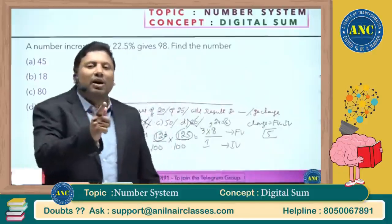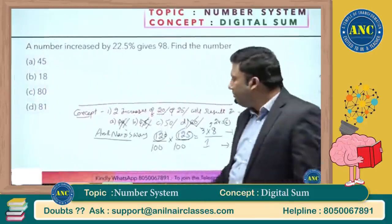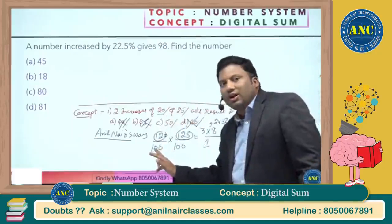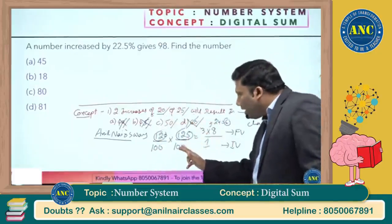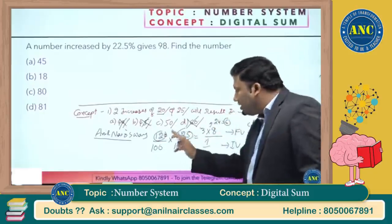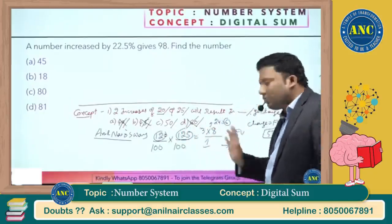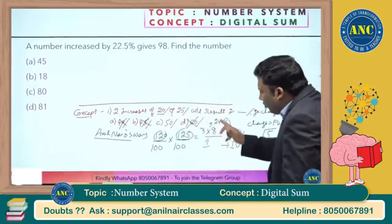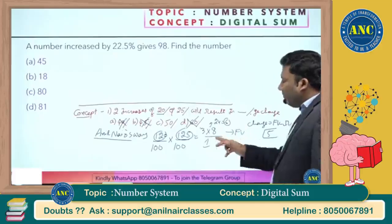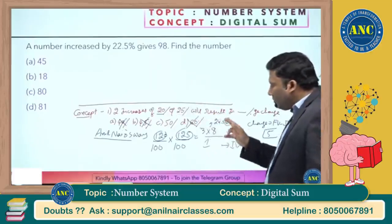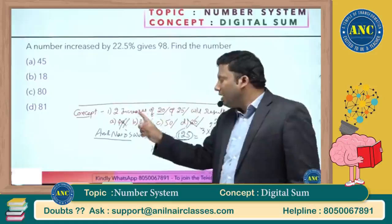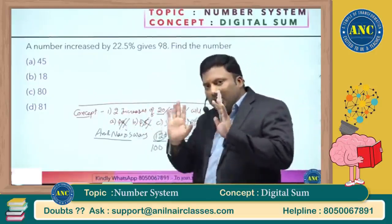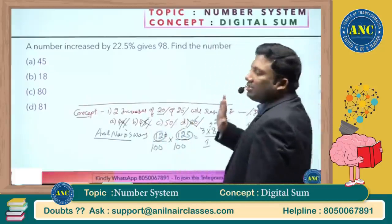Two increases of 20 and 25 percentage: increase means initial value is 100, 20 increase gives 120, 25 increase gives 125. Digital sum of 120 is 3, 125 is 8, 100 is 1. 3 × 8 = 24; digital sum is 6. Change = 6 minus 1 = 5. Answer digital sum should be 5. Checking options: 40 gives 4, 45 gives 9, 50 gives 5, 60 gives 6 — answer is 50.